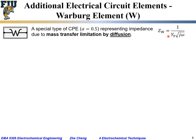The impedance is given as 1 over Y₀ times (jω)^0.5, or equivalently 1 over Y₀ times the square root of jω. This is the impedance for the Warburg element, Z_W. Mathematically, we can rewrite this by keeping Y₀ in the denominator and square root of ω in the denominator.